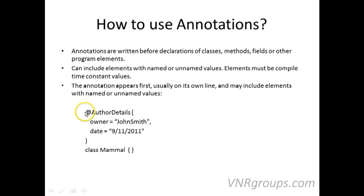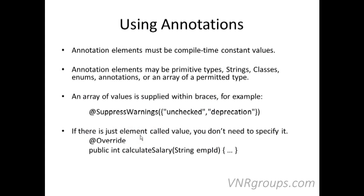An annotation appears before the element it applies to. In this case, the @AuthorDetails annotation applies to the class called Mammal. All values here are strings, so they are constant values. Annotation elements can be primitive types like integers, floats, or doubles; they can be strings; they can be class types; they can be enums; and so on.